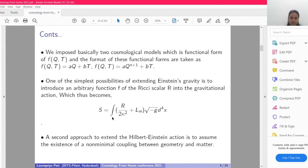Here L_m represents the Lagrangian matter, g represents the determinant of the metric, and d^4x is the four-velocity vector. Q is the non-metricity term. A second approach to extend the Einstein-Hilbert action is to assume the existence of a non-minimal coupling between geometry and the matter part.